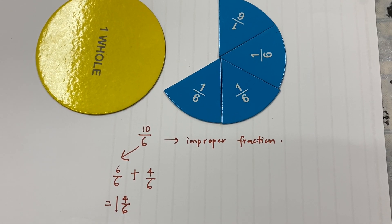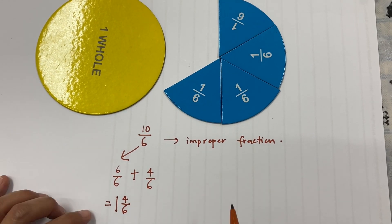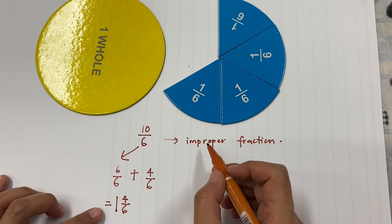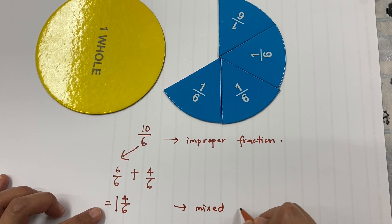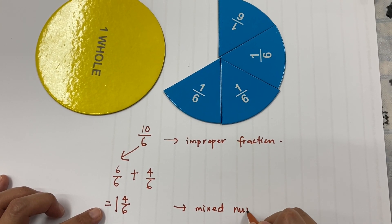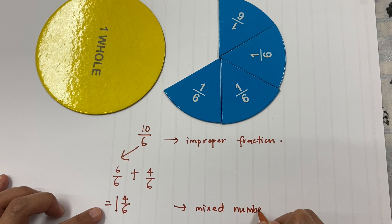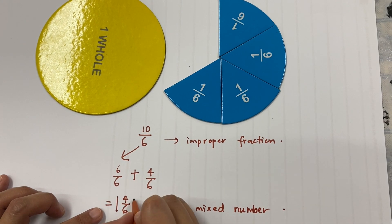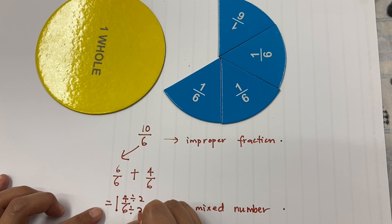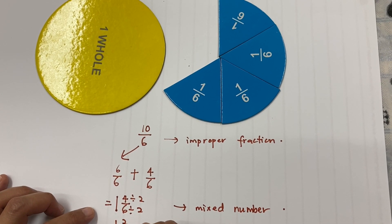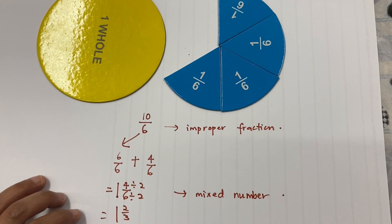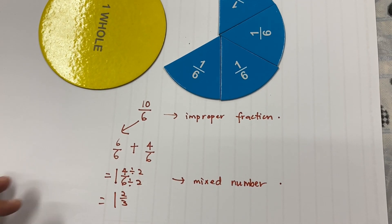That's your improper fraction converted to a mixed number. You can also simplify this answer — your final answer is 1 whole and 2 thirds.